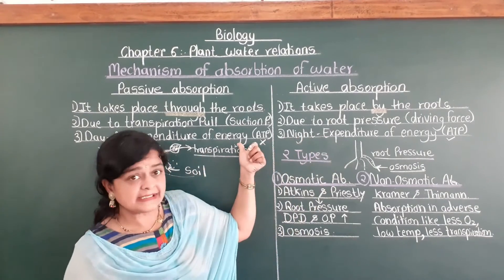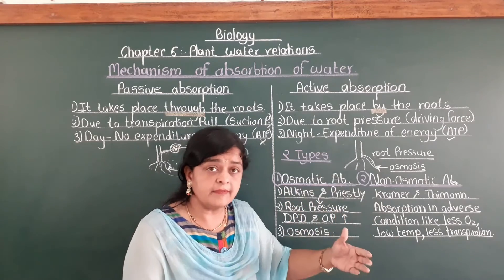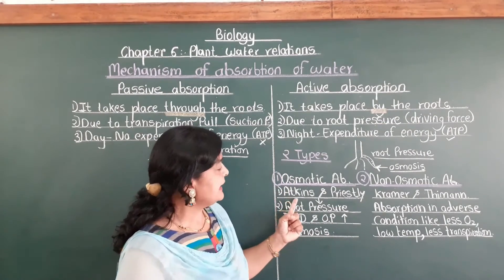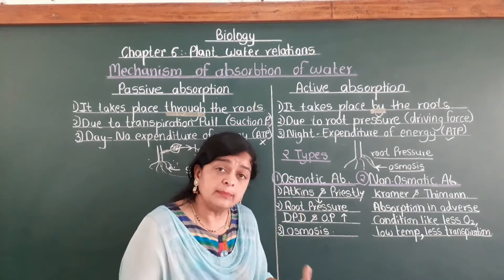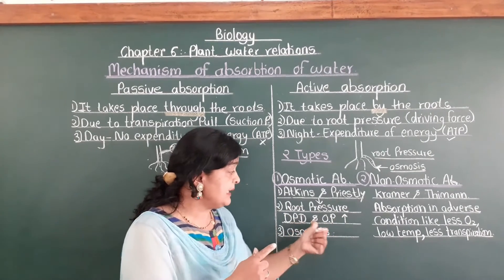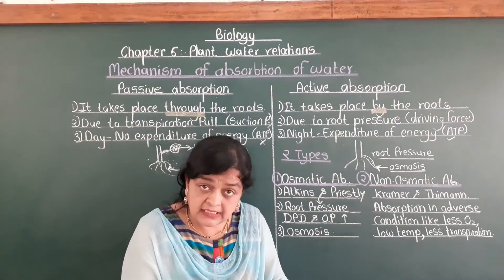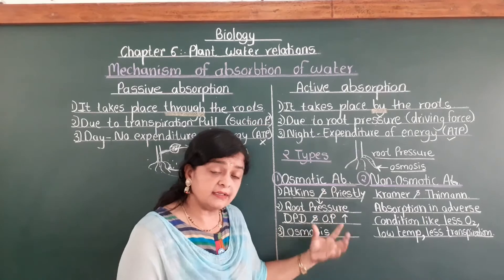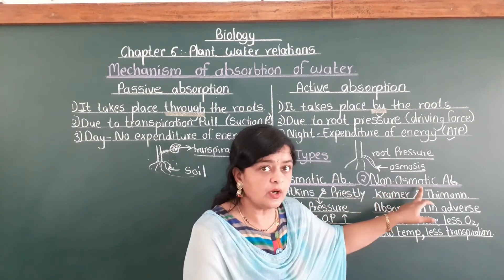In passive absorption, no expenditure of energy is required. But in active absorption, roots are doing a lot of effort, so extra expenditure of energy is done. According to scientists, this active absorption takes place when root pressure is created — when DPD and osmotic potential develop, osmosis takes place. If absorption is done only because of osmosis and root pressure, this is called osmotic absorption. Another type is non-osmotic absorption.